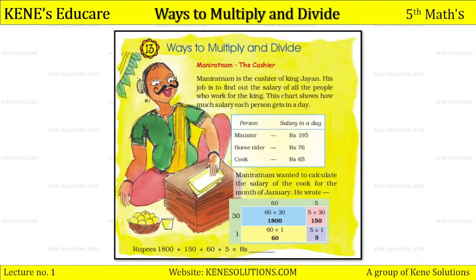Mani Ratnam is the cashier of King Jayan. His job is to find out the salary of all the people who work for the king. This chart shows how much salary each person gets in a day. The persons listed are: minister, horse rider, and cook. The salary per day is — minister: 195, horse rider: 76, and cook: 65.